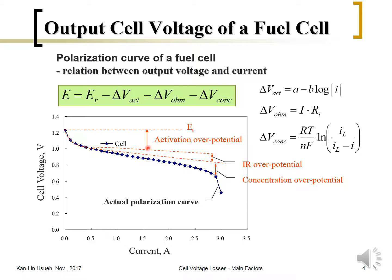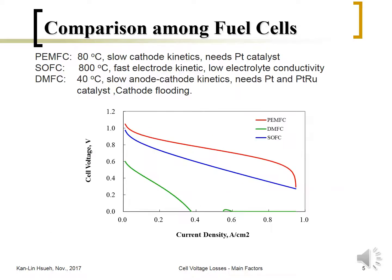Depending on the fuel cell type, the importance of each loss may differ. For the PEM fuel cell, which operates at low temperature, the oxygen reduction reaction kinetics are very slow, so the activation overpotential is significant — that is why platinum is needed as a catalyst. The polarization plot for a PEM fuel cell shows a prominent activation overpotential drop at low current density.